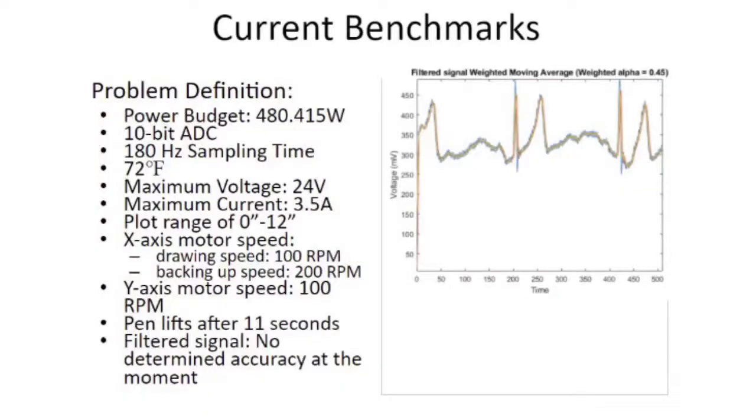As for our current benchmarks, our power budget ended up being about 480 watts. We ended up needing a second power supply, so that drastically decreased how much we'd actually be pulling. But again, that's not necessarily how much our device is pulling collectively, but that's the maximum amount we would be pulling. We still ended up having a 10-bit ADC. We needed all the information in the signal. We did change the sampling time to about 180 hertz to accommodate the 60 hertz rippling noise that we were getting in the signal. It helped mitigate that.